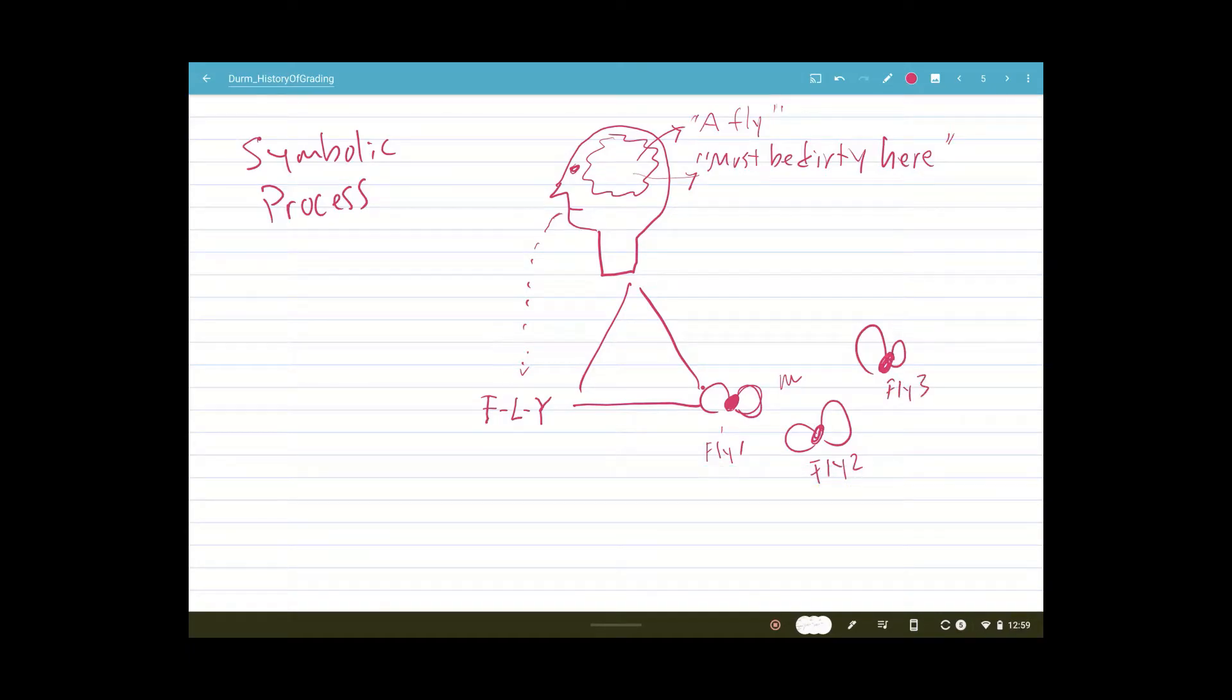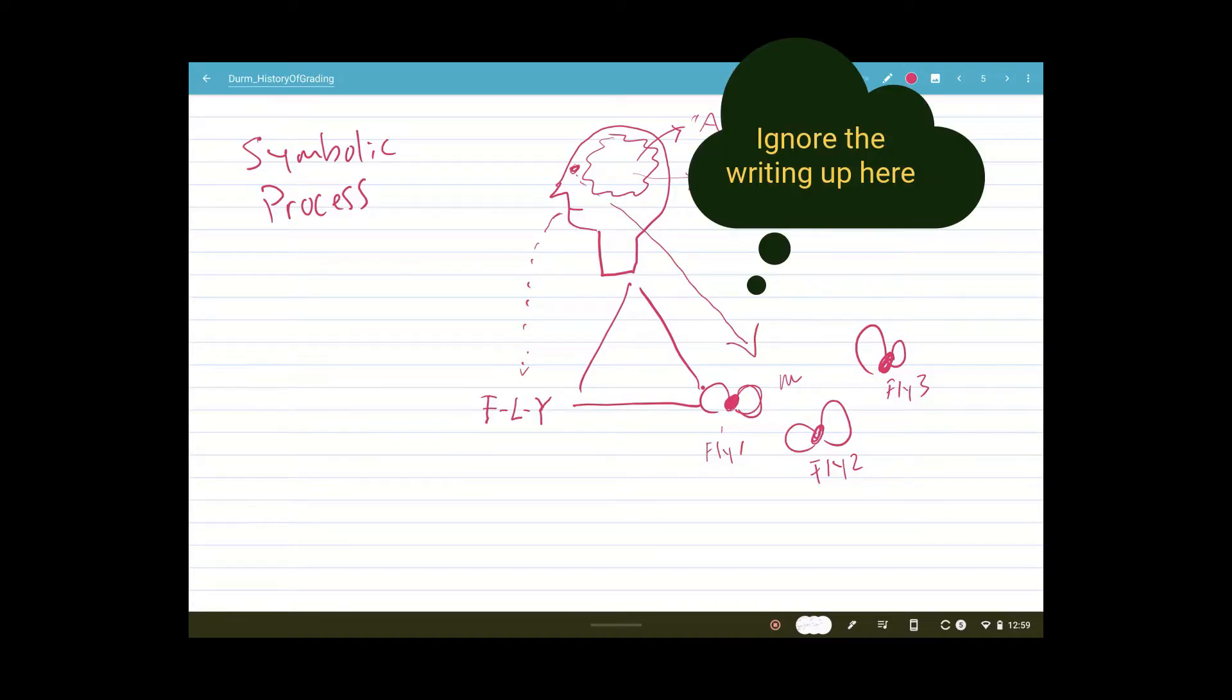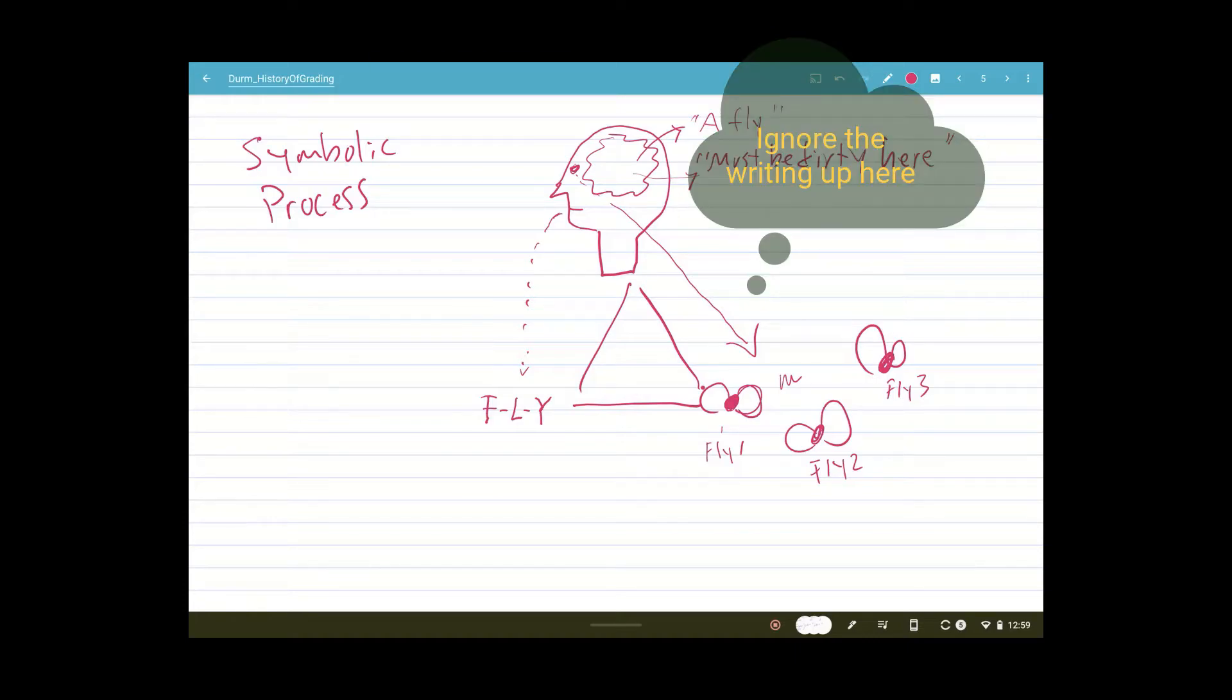Fly three. So we have a fly, and so there's a referent, what's being observed, right? So there it is. And then this person through his eyeballs sees the fly, and then in his brain there's an impression: a fly. It must be dirty here.